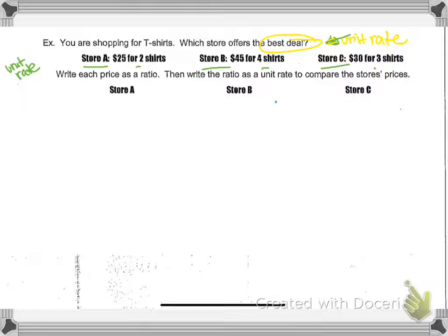So anytime I have something that asks you for the best deal, it's always considered unit rate. So in this example, I am shopping for t-shirts. I want to figure out what's the cheapest deal to get the cheapest price on this t-shirt. I don't want two shirts or four shirts or three shirts. I just want to figure out and compare how much it costs for one shirt at every store. So let's talk about store A.